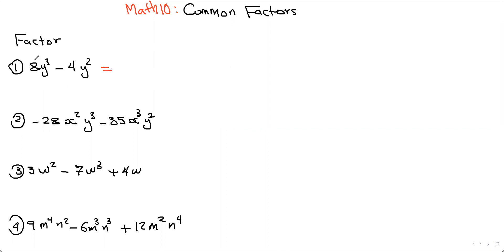How do we find the greatest common factor? You see the numbers 8 and 4 here — which number goes into both? 4 goes into both 4 and 8. With the variables, you choose the one with the lower exponent, which is y squared. After you write the GCF, divide the first term: 8y³ divided by 4y² gives 2y. Then 4y² divided by 4y² gives 1, so you write minus 1.